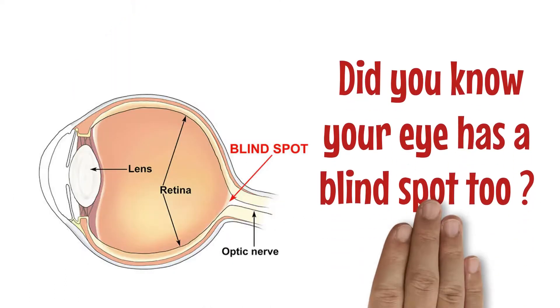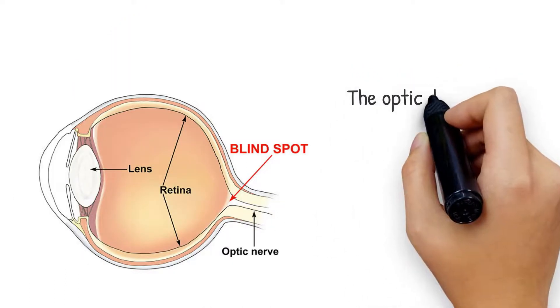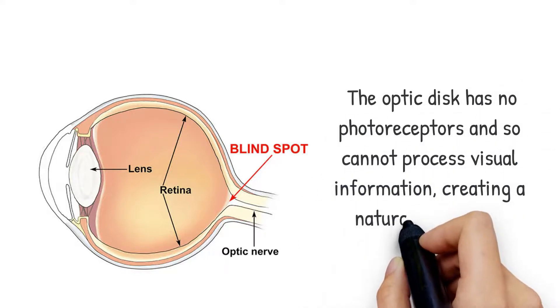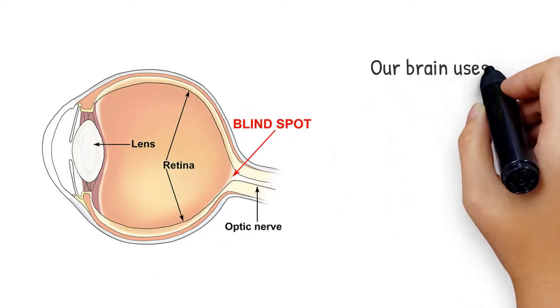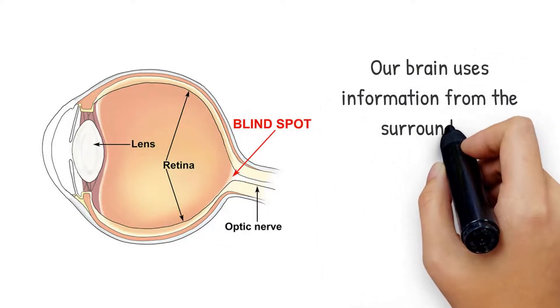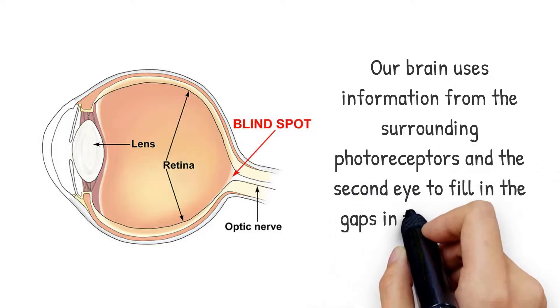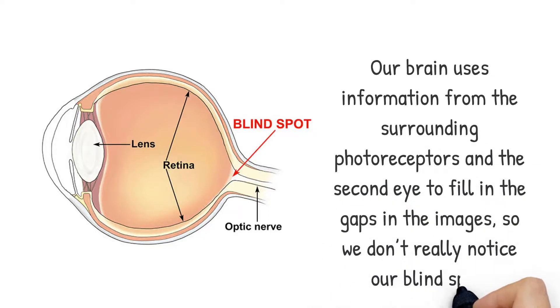Did you know your eye has a blind spot too? The optic disc has no photoreceptors, and so cannot process visual information, creating a natural blind spot. Our brain uses information from the surrounding photoreceptors and the second eye to fill in the gaps in the images, so we don't really notice our blind spot.